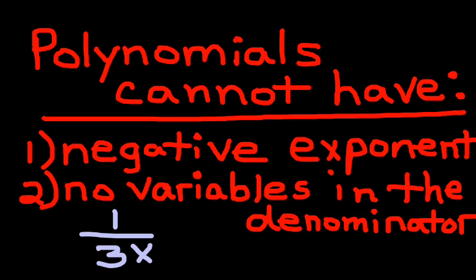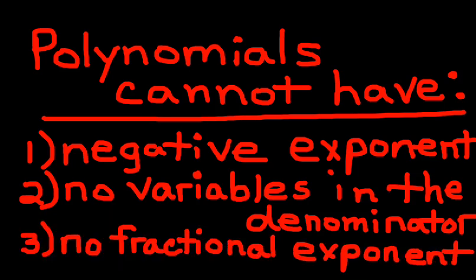The third and final thing that you cannot have, if you want to call it a polynomial, is you can't have fractional exponents. You can't have 3x to the 1 half power. That means a root. That would be a square root, the same thing as a square root. So you can't have fractional exponents on your variables. Again, you could have 4 to the 1 half power. That's just a constant and that actually represents a number, but you can't put fractional exponents onto the variables themselves.